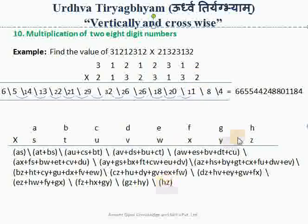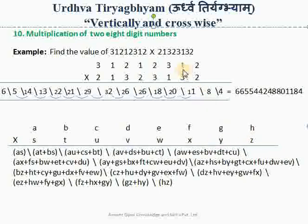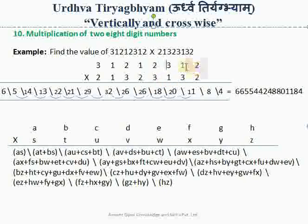Initially, in the first step, we multiply the two unit place numbers: 2 into 2, and we write 4 here. In the second step, we multiply two columns G into Z plus H into Y: 2 into 1 plus 3 into 2, that is 2 plus 6 = 8, so we write 8. In the third step, considering three columns: 3 into 2 = 6, plus 1 into 2 = 8, plus 1 into 3 = 11, so we write 11.